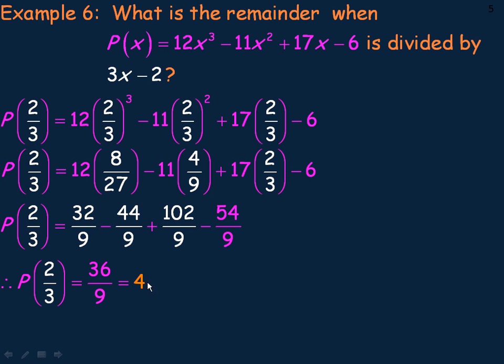Now, we'll verify this by using synthetic division that the remainder is 4. Just another way to do this. So the synthetic division will look like this. 12, negative 11, 17, negative 6. The restriction, remember, was 2 thirds. That's why we have 2 thirds here. Bring the 12 down.